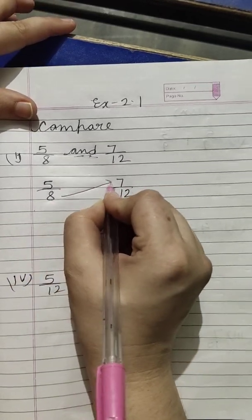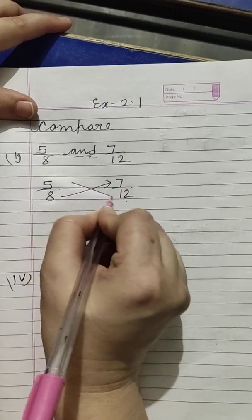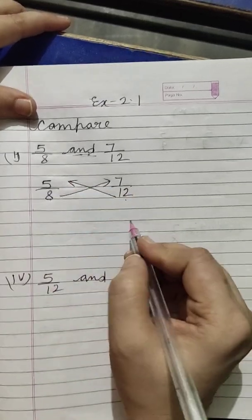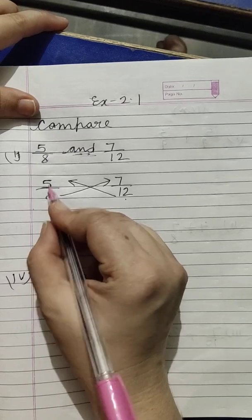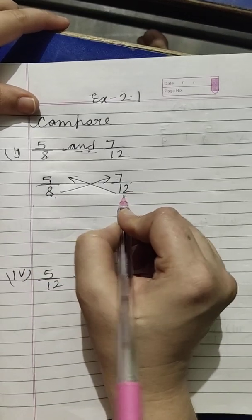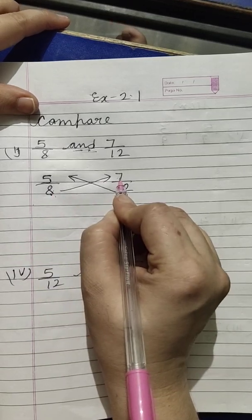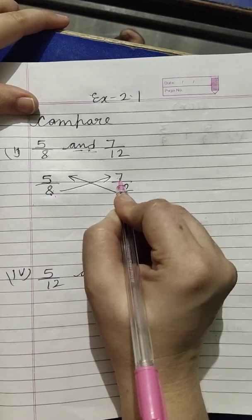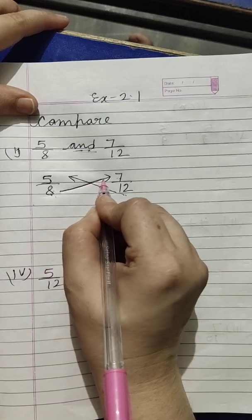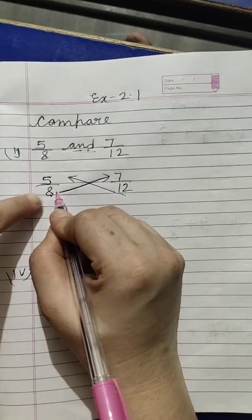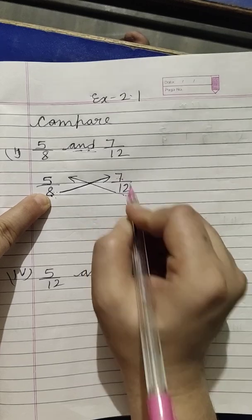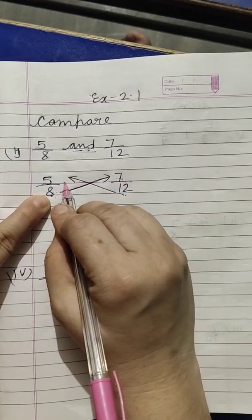Now we do cross multiplication. We call it cross multiplication. What does cross multiplication mean? The first fraction and the second fraction, the denominator is multiplied by the numerator. We have to multiply with the second numerator. Look at the arrow. This denominator is going to the denominator, and this denominator is going to the denominator.